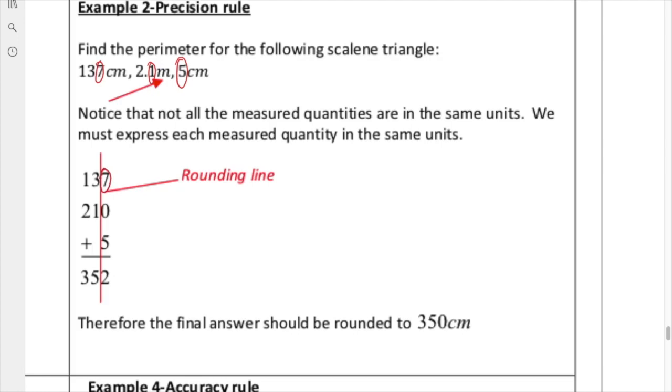And that is a guess. So when we convert these into centimeters, 137, there's our guess. The 210, that 1 is our guess. And then the 5, that's our guess. If you take a look over here, this number here has the worst precision. This one has the worst precision because the guess is in the tens column. The guess for these ones are in the ones column. The guess for this is in the tens column. That means everything to the right of the tens column has to get rounded away.